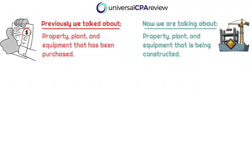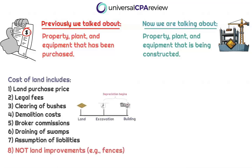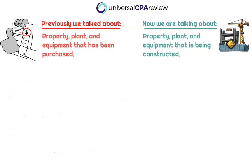At this point, we've talked about property, plant, and equipment that has been purchased, and basically we're saying that PP&E was being valued at historical cost — and that cost would also include additional associated costs that would bring it to completion and ready to be used. But now we're talking about a situation where we're not purchasing the property, plant, and equipment. We're talking about a situation where this PP&E is being constructed — we're manufacturing the building, manufacturing the machinery — that is now going to be used for our business.